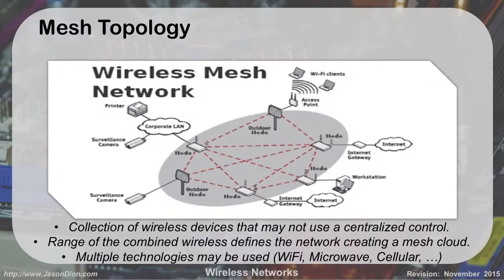We can also mesh together multiple technologies. In a mesh topology, multiple wireless devices may or may not use a centralized control system, and the range of the combined wireless defines the mesh cloud. We can use multiple technologies — in addition to wireless, things like cellular or microwave. A simple example is a cellular hotspot — it gets an Internet connection via cellular and then provides wireless access over Wi-Fi to the five closest devices. That technically is a wireless mesh network.